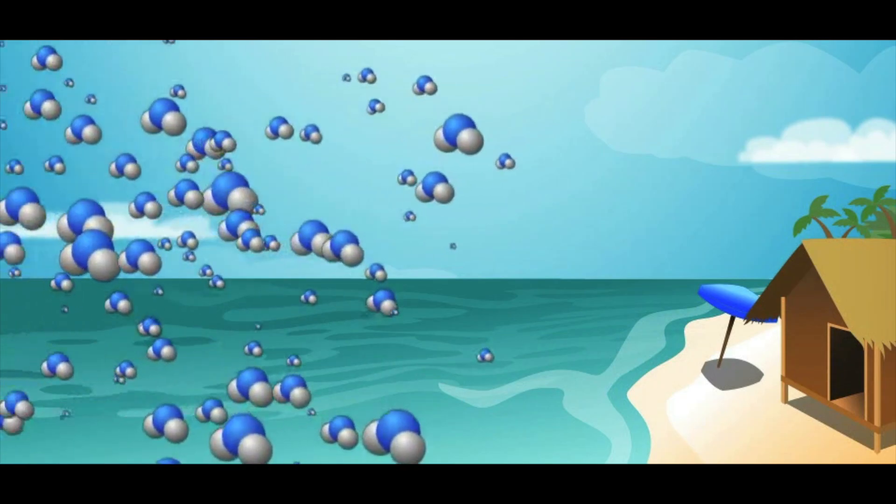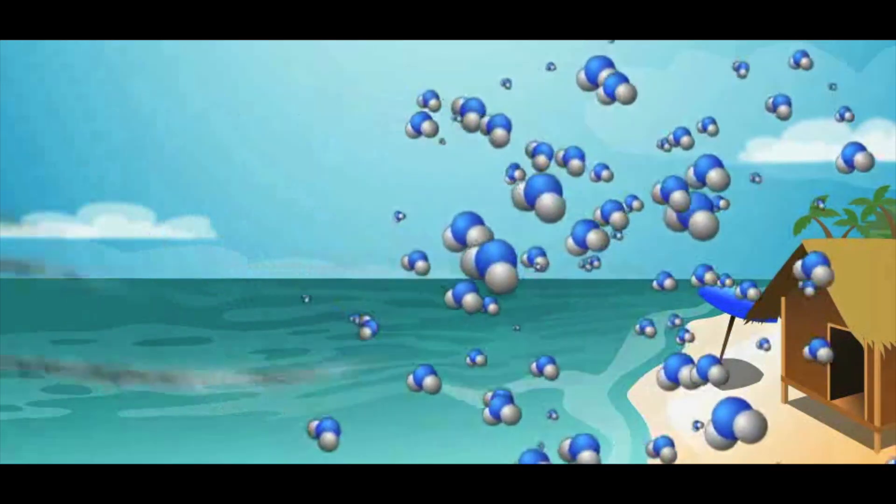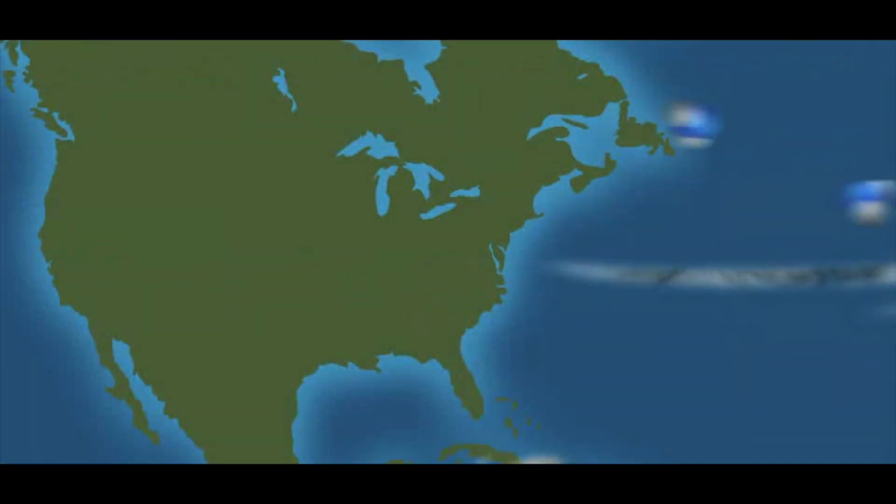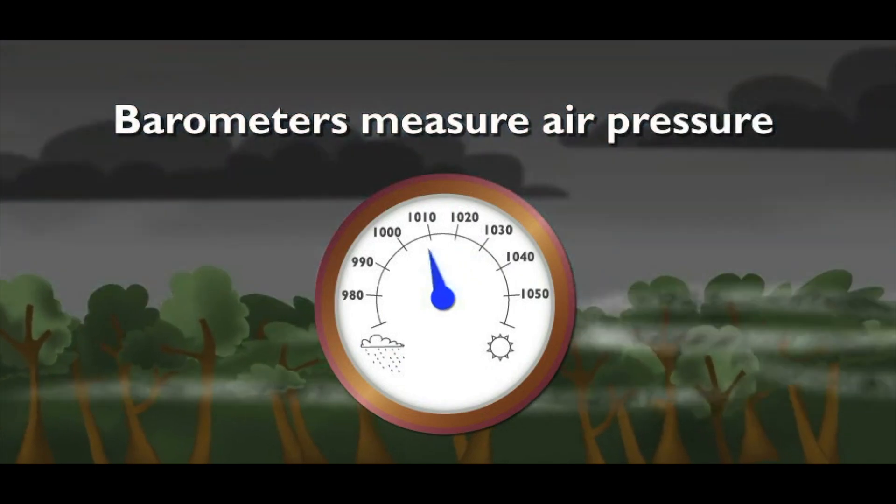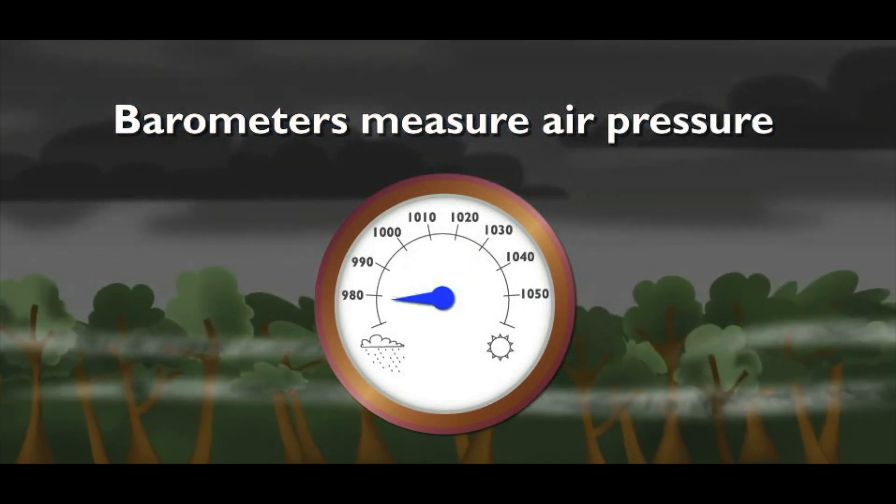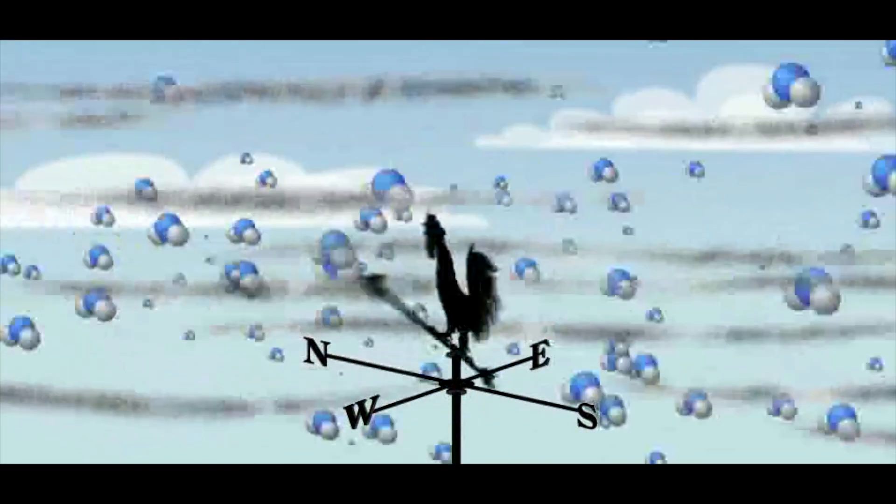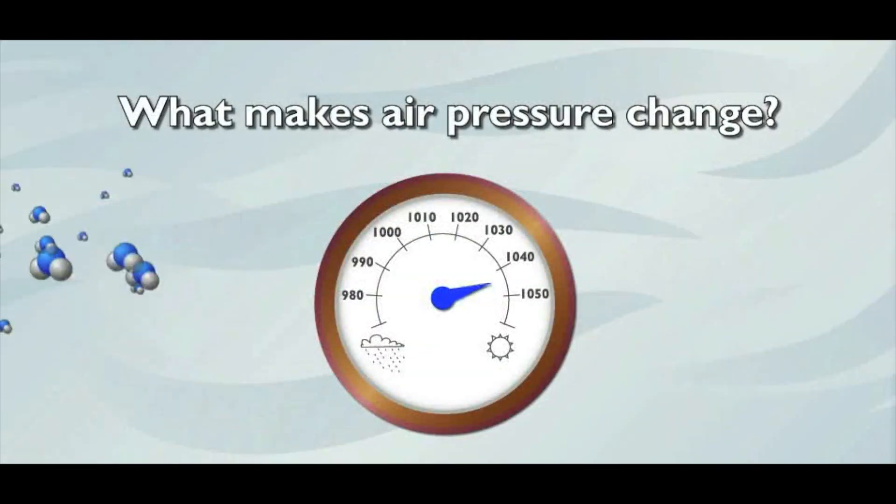Sometimes they float gently in a breeze, and other times, like in a hurricane, they're blasted along at hundreds of miles an hour. But what makes the wind strong or weak? Everything from a breeze to a hurricane blast is caused by air pressure. That's the force with which air molecules push against us and everything around us. When the air pressure changes, so does the strength of the wind. What makes air pressure change?